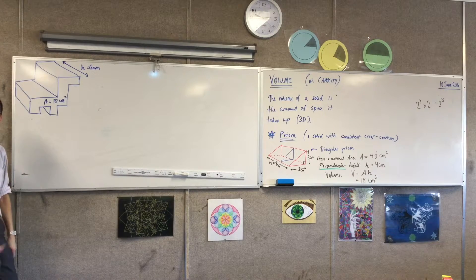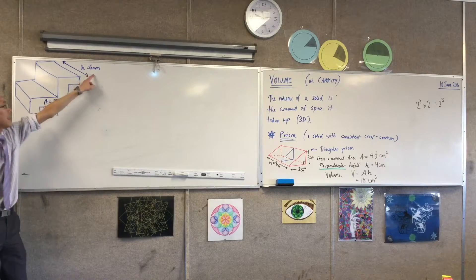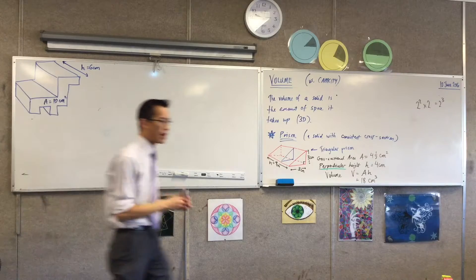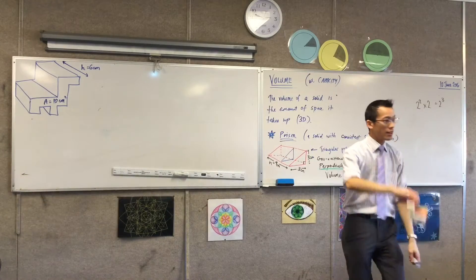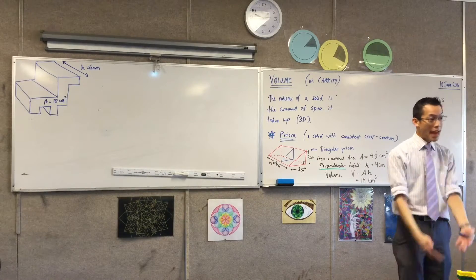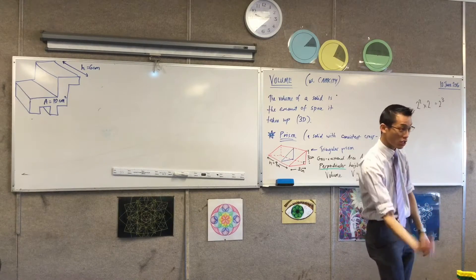So, my dinosaur prism, it doesn't matter how weird it is. I've got a cross-section. I've got a height that's perpendicular to that cross-section. If you like, to try and make sure you pick the right length, think about the cross-section, where it is, and put it on the ground. Now it's the base.